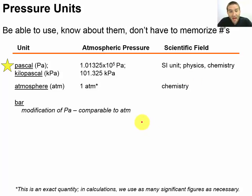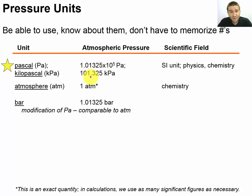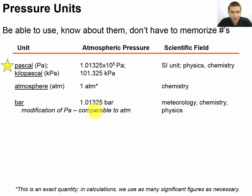Next up is the bar, which is a modification of Pascals and is comparable in some assumptions to atmospheres. One bar equals 1.01 times 10 to the fifth Pascals — essentially shifting the kilopascal decimal two more places to make a nice, comparable unit. One atmosphere is approximately one bar, a small deviation. The bar is commonly used in meteorology, chemistry, and physics. It's just a useful modification of the Pascal, much like the angstrom is a useful modification of meters for describing atomic sizes.